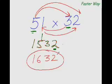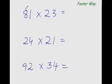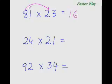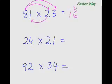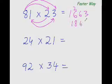8×2 is 16, so I put 16 here. 8×3 is 24 and 2×1 is 2 — 24 plus 2 is 26. And 1×3 is 3, so the answer is 16, plus 2 carry, is 18 — 63. The answer is 1863.